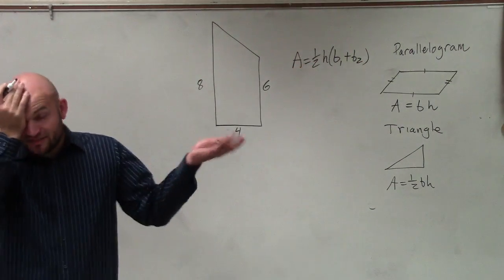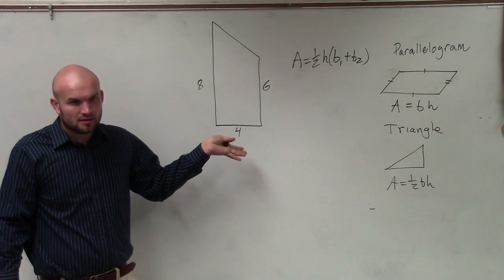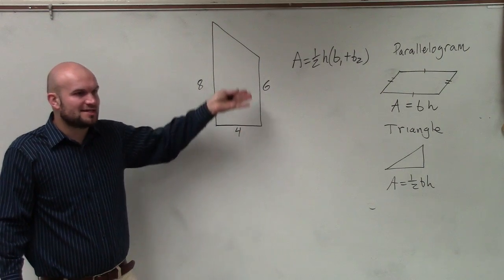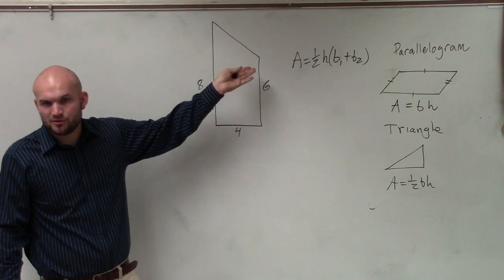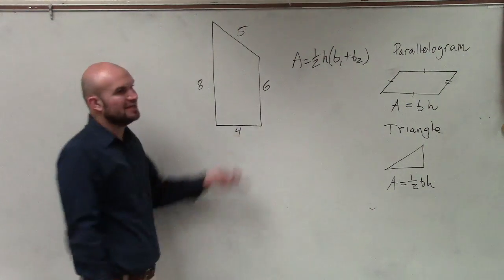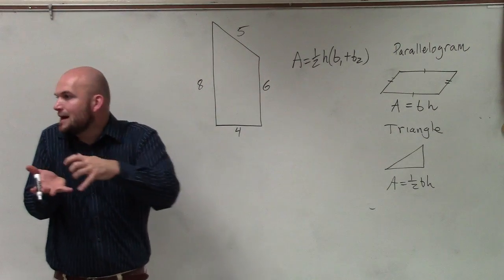Now, looking at this trapezoid, you guys might say, oh, well, that obviously looks like the base, right? But then we look to the top, do we have a base 2? No. We don't have a base 2. And even if I put in a random number here, is that the second base? No. The bases are going to be opposite of each other.